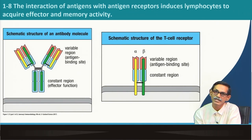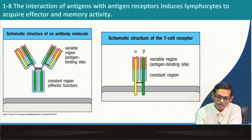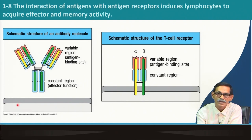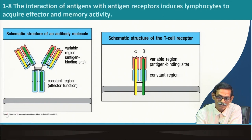Both B and T lymphocytes have a receptor — you already know this. This is the B cell receptor and how it looks. It will be a receptor only if it is integrated with the membrane.